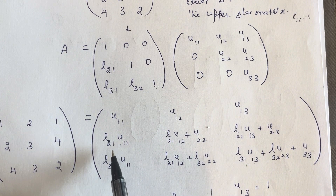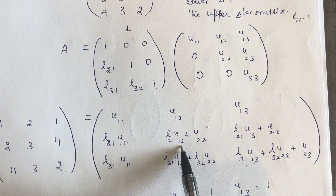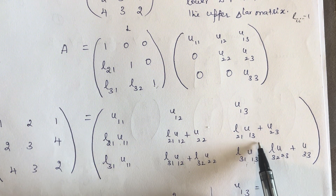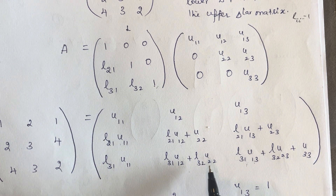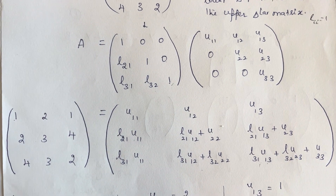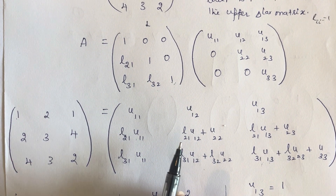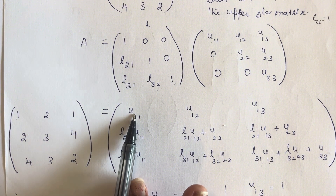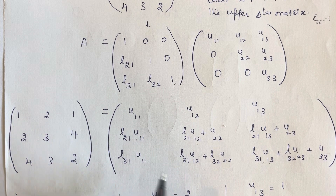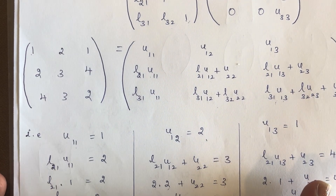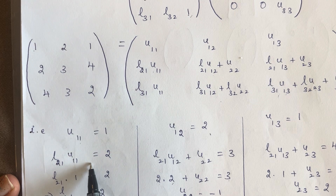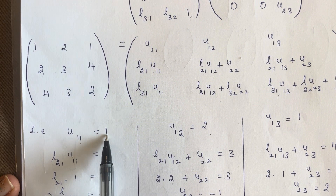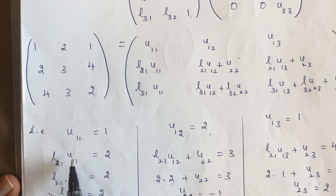By multiplying, the second row gives: L21·U11, L21·U12 + U22, and L21·U13 + U23. The third row gives: L31·U11, L31·U12 + L32·U22, and L31·U13 + L32·U23 + U33. Since A equals LU and both matrices are equal, I can compare the elements. So U11 = 1, U12 = 2, U13 = 1. Then L21·U11 = 2; since U11 = 1, we get L21 = 2.